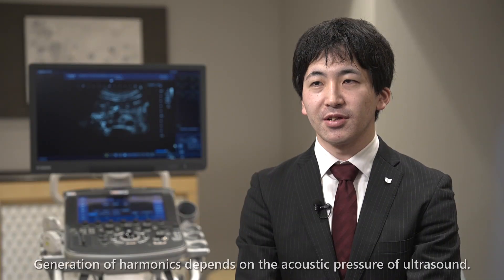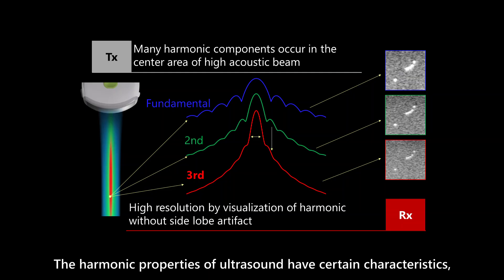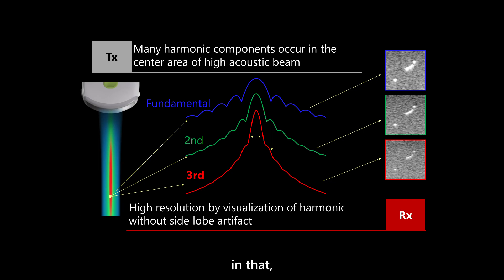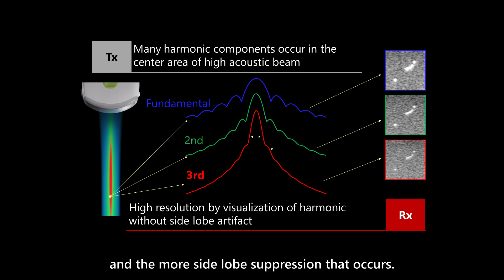Generation of harmonics depends on the acoustic pressure of ultrasound. The harmonic properties of ultrasound have certain characteristics in that the higher the order of harmonics, the thinner the main beam becomes, and the more side-lobe separation that occurs.